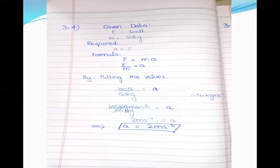Again, according to Newton's second law of motion, F equals ma. Rearranging: a equals F divided by m. Putting the values: 100 divided by 50 kg gives acceleration equal to 2 meters per second squared. This is the answer of the fourth numerical.